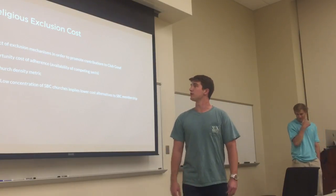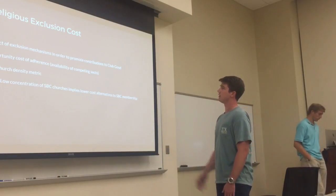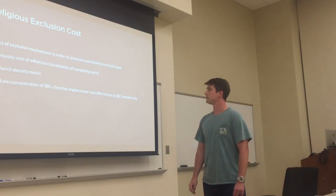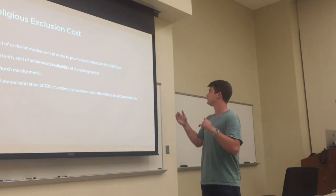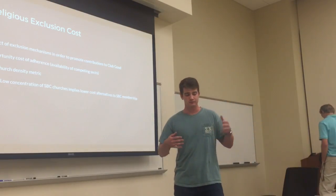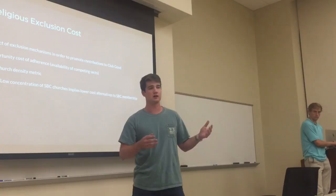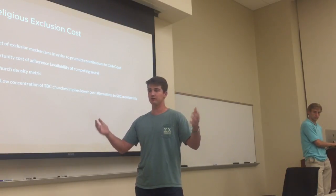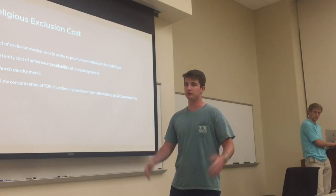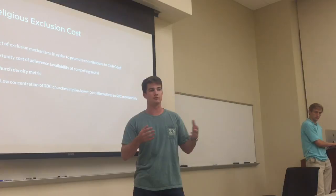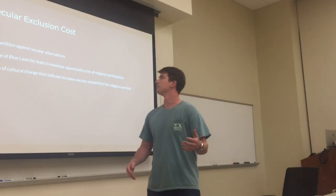Religious exclusion cost refers to the impact of exclusion mechanisms in order to promote contributions to the club good — specifically the opportunity cost of adherence and availability of denominations. The SBC density metric measures the concentration of SBC churches: a low concentration implies lower-cost alternatives to SBC membership. Religious cost increases when there are more avenues to give in other areas — the opportunity cost increases. With only one church in a given area, there's a very low opportunity cost, similar to a monopoly of churches.